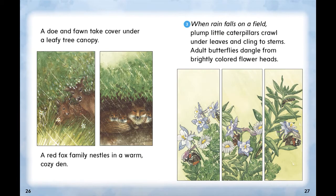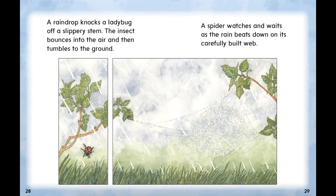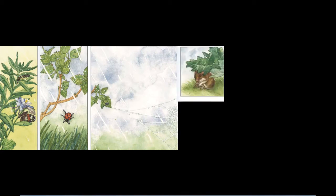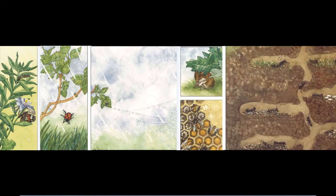When rain falls on a field, plump little caterpillars crawl under leaves and cling to stems. Adult butterflies dangle from brightly colored flower heads. A raindrop knocks a ladybug off a slippery stem — the insect bounces into the air and then tumbles to the ground. A spider watches and waits as the rain beats down on its carefully built web. A mouse crouches under a fallen leaf. Bees hide in hives, and ants stay safe in their underground nests. Summary: When it rains on a field, caterpillars and butterflies hang on plants, a ladybug falls to the ground, a spider waits, a mouse stays under a leaf, bees stay in a hive, and ants stay in their nests.